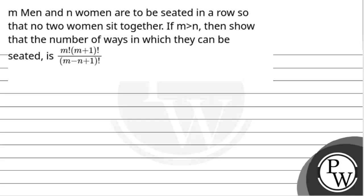Hello, Bacho. Let's read the question. The question says M men and N women are to be seated in a row so that no two women sit together. If M is greater than N, then show that the number of ways in which they can be seated is M factorial times M plus 1 factorial divided by M minus N plus 1 factorial.